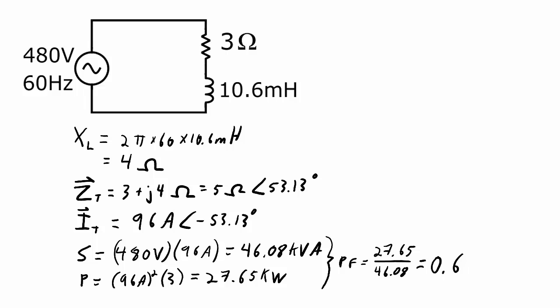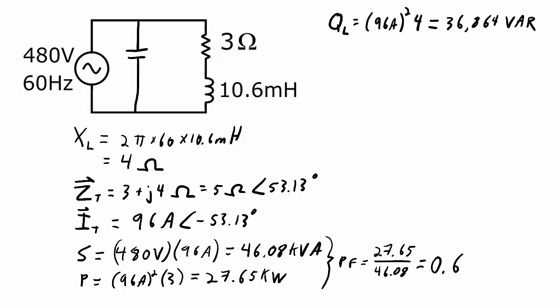0.6 is pretty low. So what do I do to correct for that? In general terms, as we saw in that previous example, I can add a capacitor, and that capacitor is going to have reactive power that is the opposite type from the inductor. So if I can match those two reactive powers, I can get my power factor up to 1. I need to figure out the reactive power of that inductor. That's the current through it squared times the reactance of the inductor, which works out to 36,864 VAR. So I need QC equal to QL.